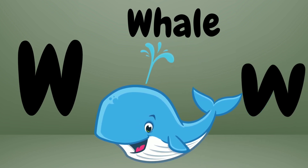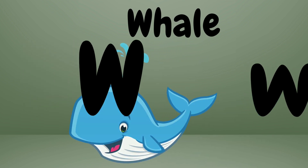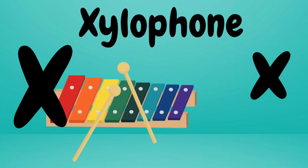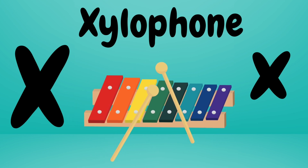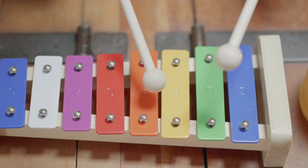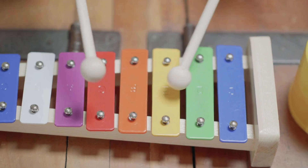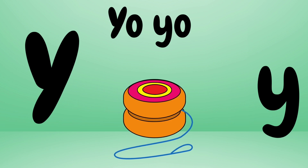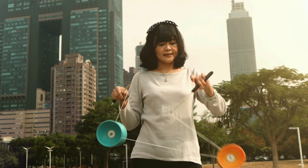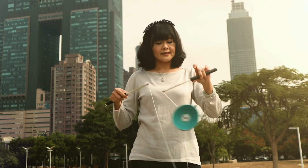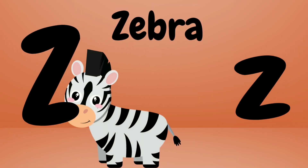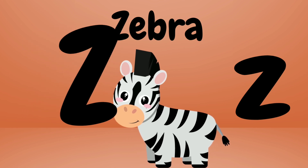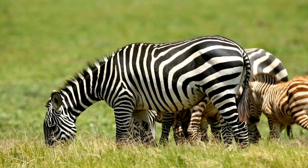W is for Whale. Whale, whale. This is a whale. X is for Xylophone. Xylophone, xylophone. This is a xylophone. Y is for Yo-Yo. Yo-yo, yo-yo. This is a yo-yo. Z is for Zebra. Zebra, zebra. This is a zebra.